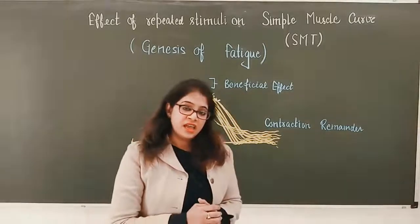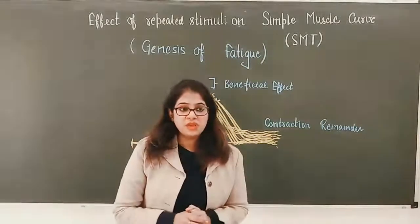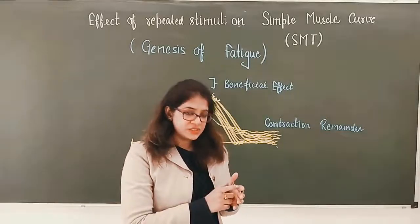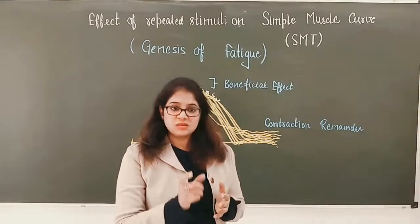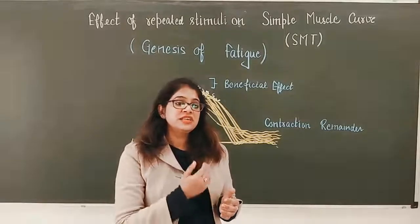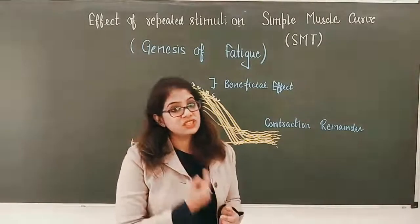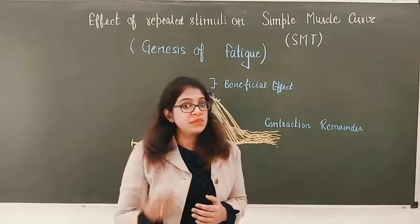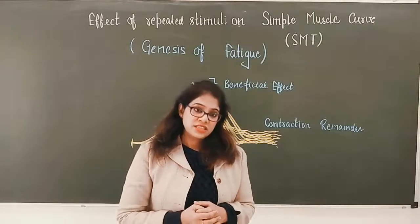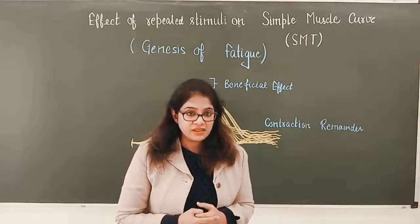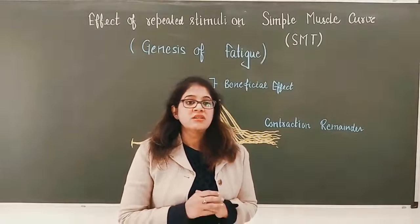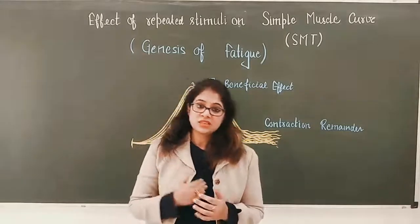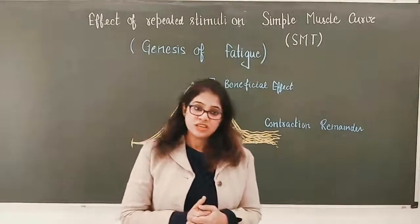The site of fatigue in a nerve-muscle preparation - which includes a nerve, neuromuscular junction, and muscle - is the neuromuscular junction, where fatigue sets in earlier. In intact human beings, fatigue sets earlier in the CNS, specifically at the synapses of the brain. These are the important questions about this curve that are asked in viva examinations.